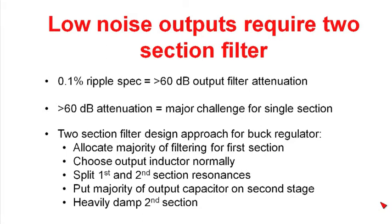You want to split the two resonances between the two sections of the filter. You want to put the majority of your output capacitances on the second stage. This helps if you have a customer that puts a lot of capacitance on your power supply. It'll minimize the impact of that capacitance on the control characteristics. And finally, I've found it best to damp the second section of the filter.